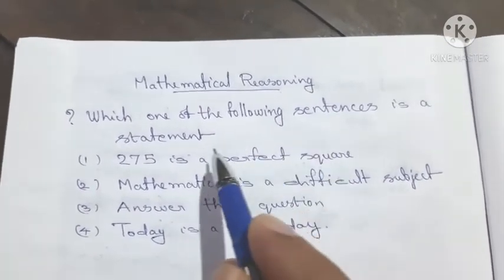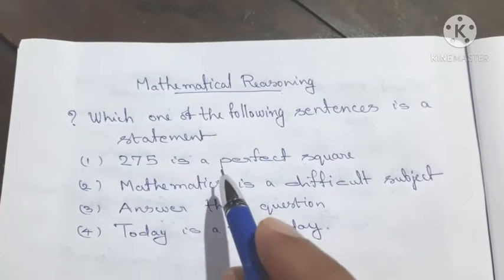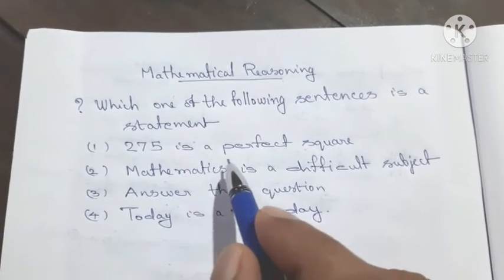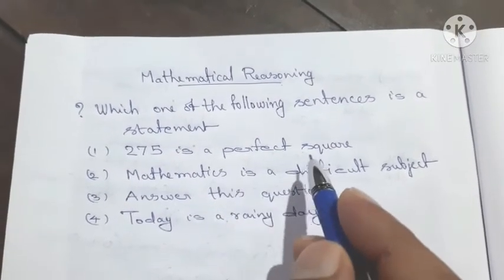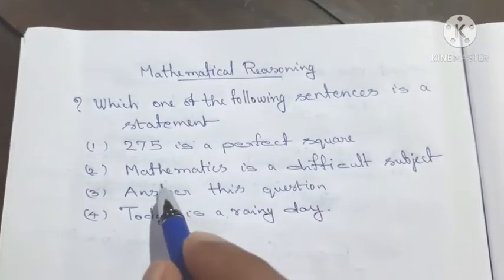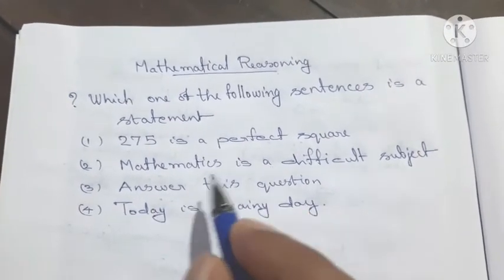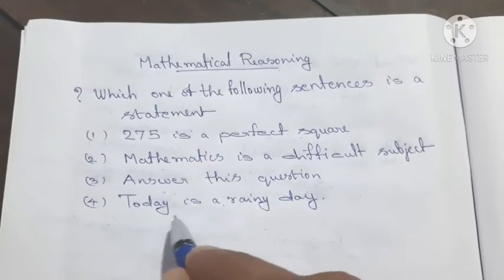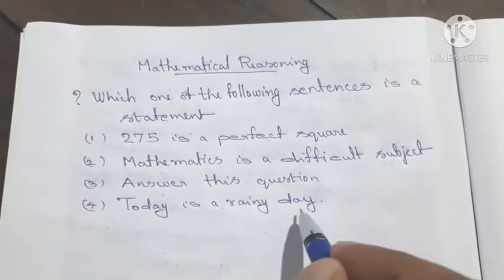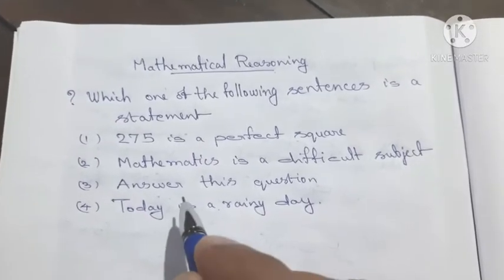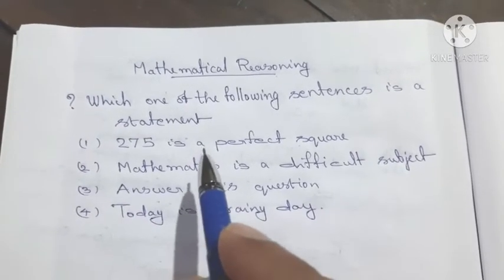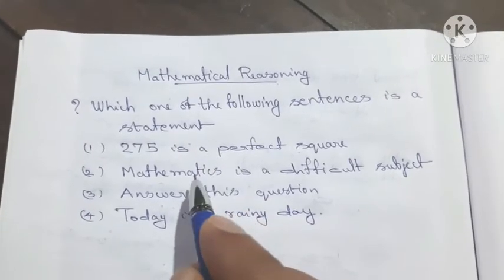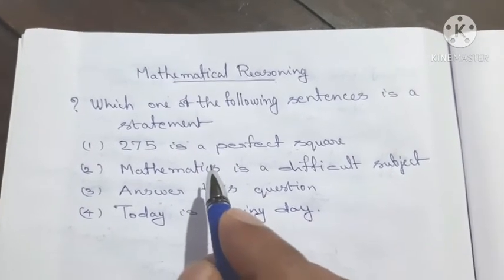Which one of the following sentences is a statement? First option: 275 is a perfect square. Second option: Mathematics is a difficult subject. Third option: Answer this question. Fourth option: Today is a rainy day. A statement is a sentence that is either true or false.